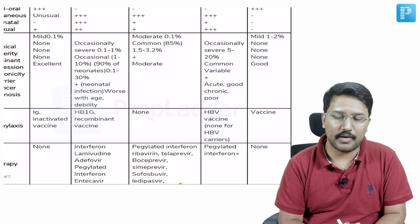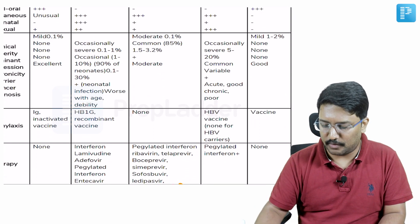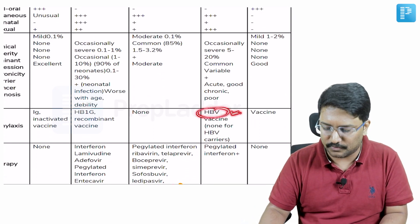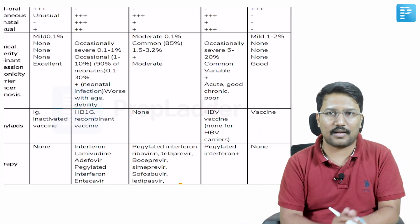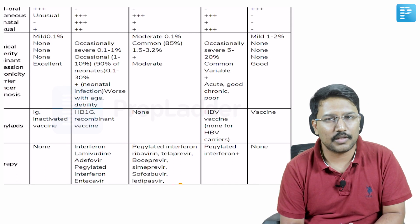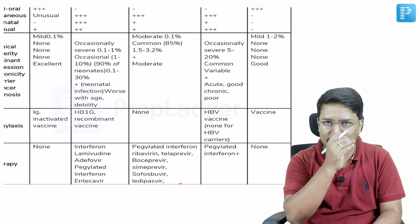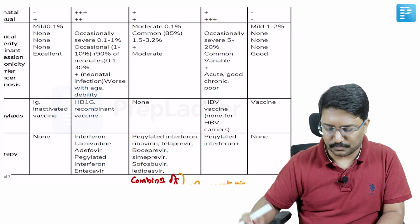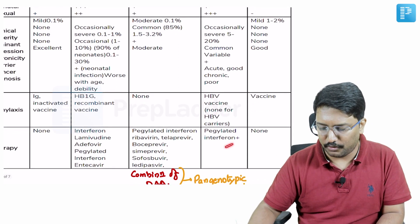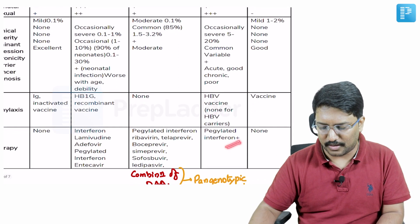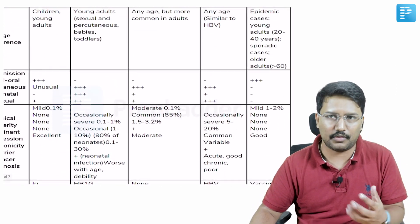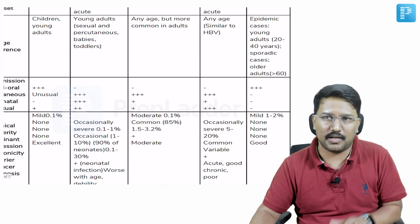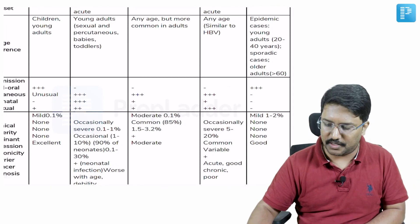For prevention, we don't have a specific prophylactic vaccine for HDV, but the HBV vaccine indirectly confers prophylaxis against HDV because HDV cannot infect alone. For treatment, you can consider pegylated interferon alpha and properly managing the HBV infection.